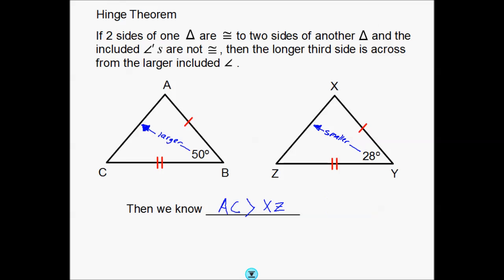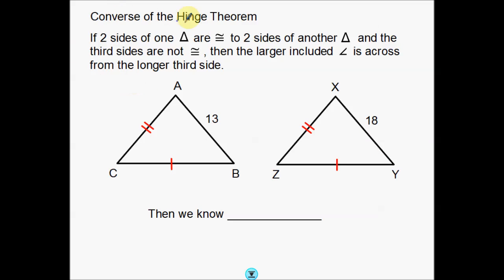Now on to its counterpart, the converse of the hinge theorem. Instead of reading this all the way through, I'm going to go bit by bit — this is very similar so I'm going to go a little faster. If two sides of one triangle are congruent to two sides of another triangle — so again we got our tick marks. Here's one pair of congruent sides, here's another pair of congruent sides.